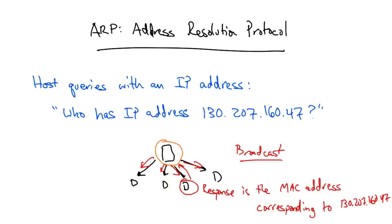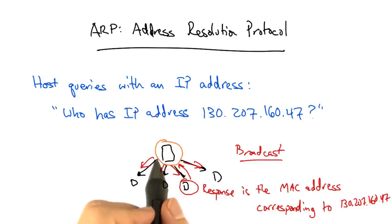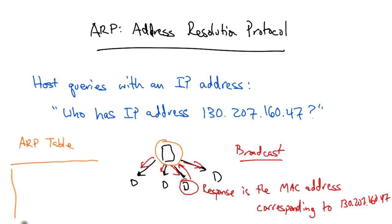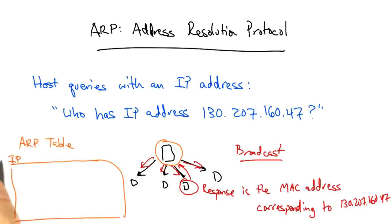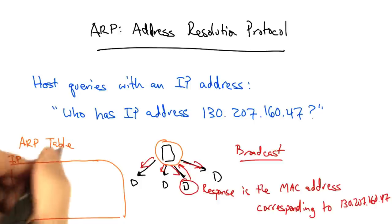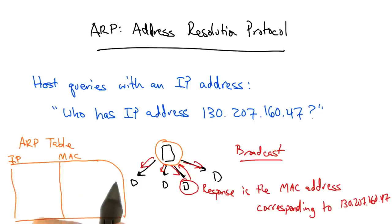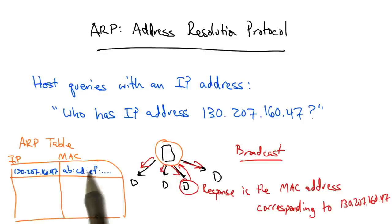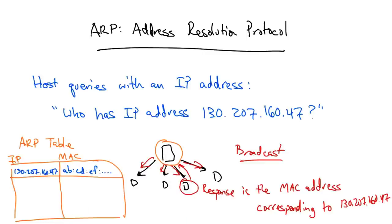When the host that issues the query receives a reply, it starts to build what's called an ARP table. The ARP table maps each IP address on the local area network to the corresponding MAC address. Now, instead of broadcasting an ARP query to discover the MAC address, the host can simply consult its local ARP table.